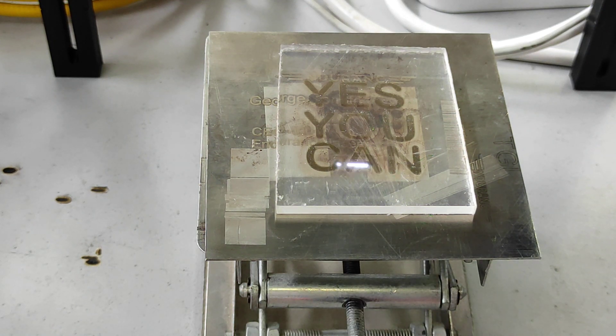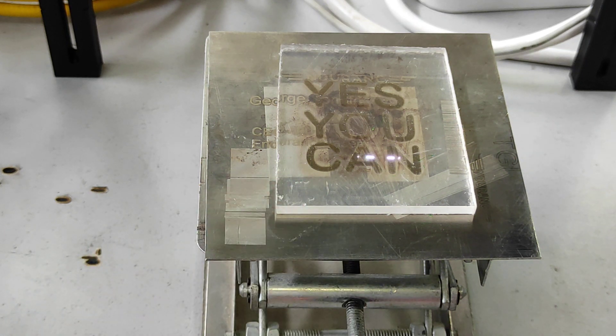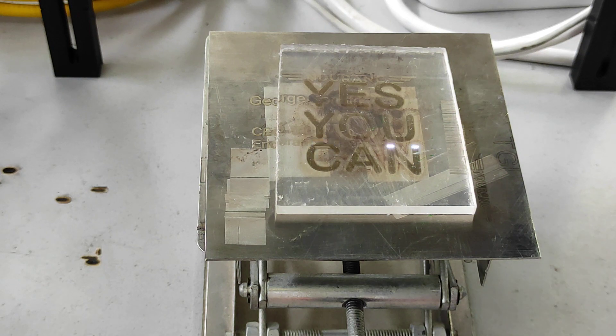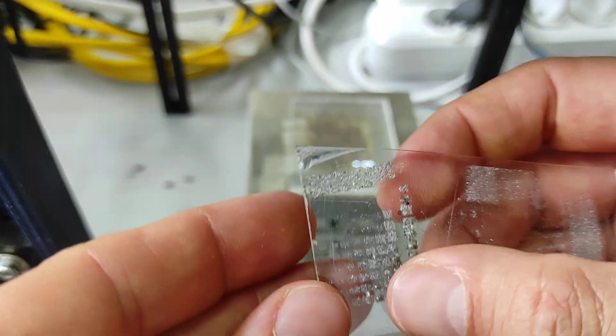Another thing I want to mention is why you need repeats. The 1064 nanometer wavelength is actually transparent for the acrylic, so you need five repeats because the first time you have some bubbles inside, and then they start to appear better. Let me show you on our example.